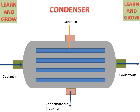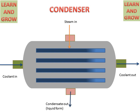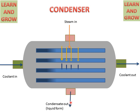Now, see the working of the condenser. Coolant flows through the tubes and then steam comes from the upper side. This is the working of the condenser.